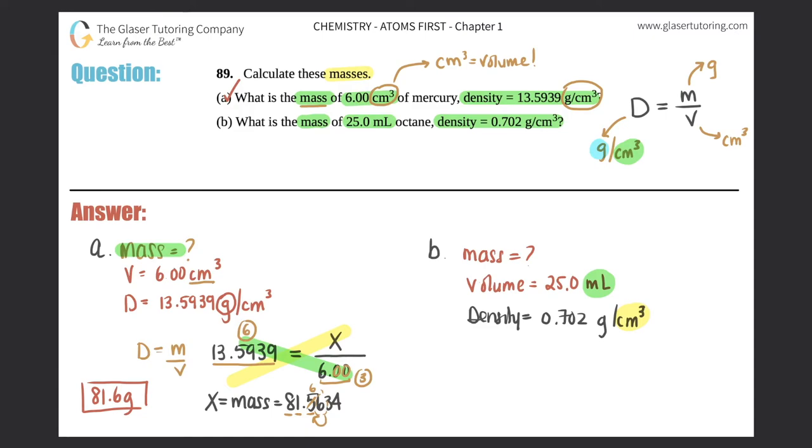Do we see a problem here? In this one the volume they gave us is in milliliters, but the density unit is in centimeters cubed. Technically they have to be the same, but just know that milliliter is equal to centimeter cubed. So for every one milliliter there is one centimeter cubed. Here 25 milliliters is just saying 25.0 centimeters cubed, and now we have the same unit.